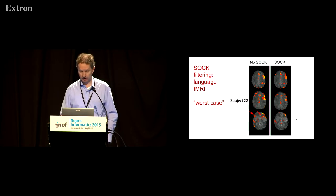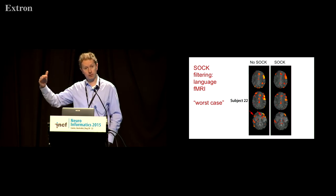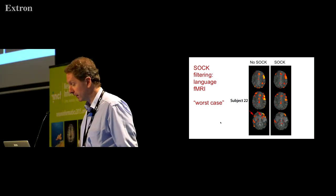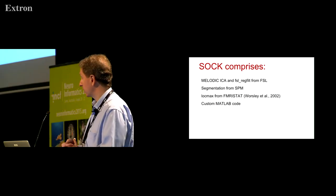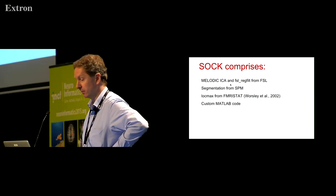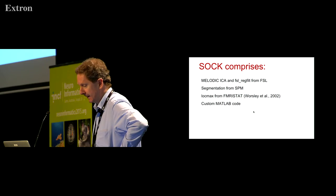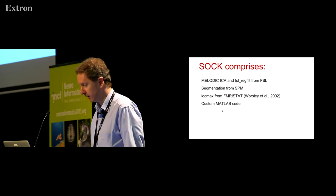It turned out this was the subject with the most motion in the study. Such high-frequency motion is difficult to remove in any way other than independent components analysis. This motion was identified because it was much higher frequency compared to what we'd expect with BOLD, so ICA managed to separate it and removing it cleaned it up. To make the point: we're not reinventing the wheel here. For much of this processing we used existing software — FSL's MELODIC for ICA, SPM for segmentation, some code from FMRIstat, and our own custom MATLAB code to implement the rest and wrap it together. This is publicly available.